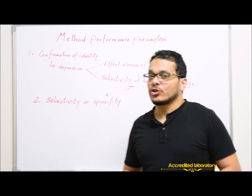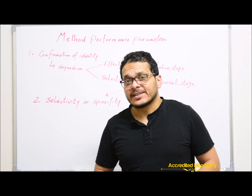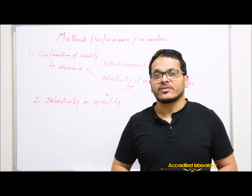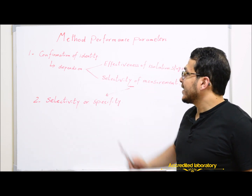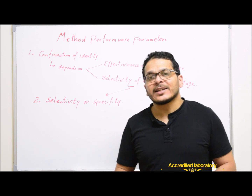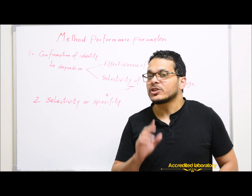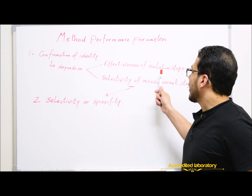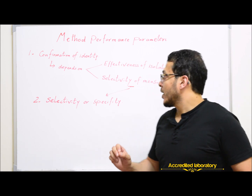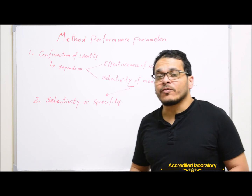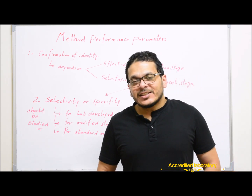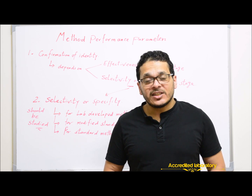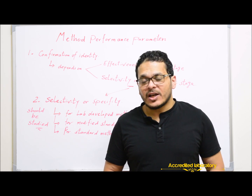Number one: confirmation of identity — how to be sure that the result you get is related to your target analyte, not any other interfering analytes. This depends on the effectiveness of the isolation stage, which is the extraction steps, and the selectivity or specificity of the measurement stage — the ability of the method to select accurately and specifically your target analytes in the presence of other interfering elements.